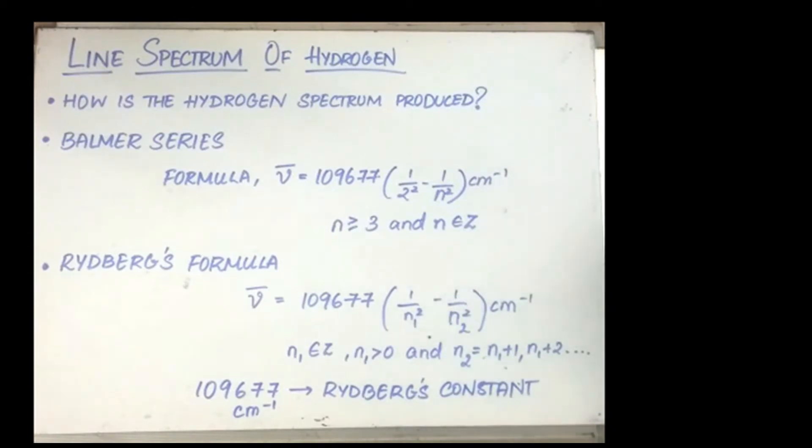The series of lines were known as the Balmer series, and these were the only visible lines in the hydrogen spectrum.